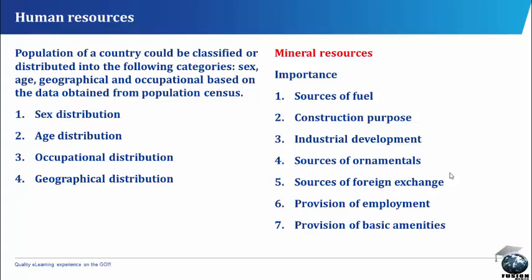Population classification or distribution: 1. Sex distribution — this shows how many males and females are in a country in a particular period. 2. Age distribution — this refers to the breakdown of the population into age groups: 0–5 years (preschool age), 6–11 years (primary school age), 12–16 years (secondary school age), 17–21 (post-secondary age group), 22–55 years (working population/labour force), 56 and above (old age group).